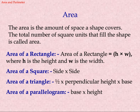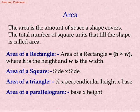Area. The area is the amount of space a shape covers. The total number of square units that fill the shape is called area. Area of rectangle equals h into w, where h is the height and w is the width.